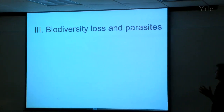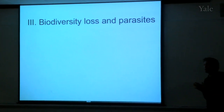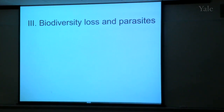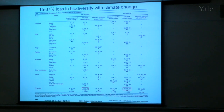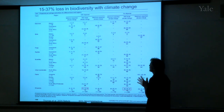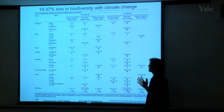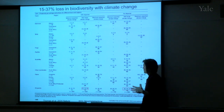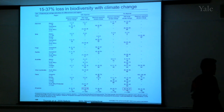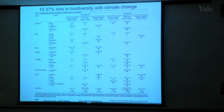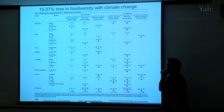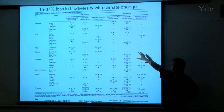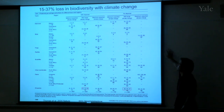Biodiversity loss and parasites. Conservation biologists tell us they expect 15 to 30 percent loss in biodiversity with climate change. I'm interested in knowing what this means for parasite biodiversity in the world. No one really cares about parasite diversity except perhaps me, but we've been using a food web approach. The red balls in these food webs are free-living species and the yellow balls are parasite species — this is for an estuary about 20 minutes south of UCSB.